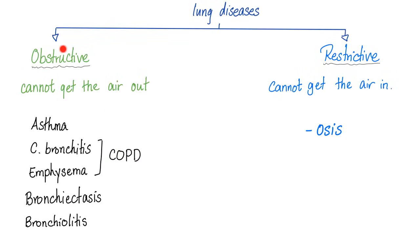As you know, lung diseases are divided into obstructive and restrictive. Obstructive: I cannot get the air out. Restrictive: I cannot get the air in. Obstructive diseases include asthma, COPD, bronchiectasis, and even bronchiolitis.